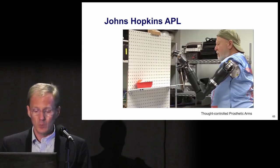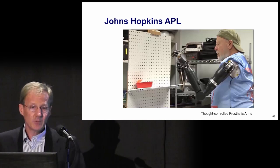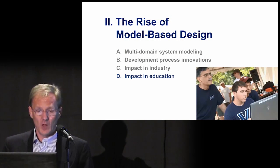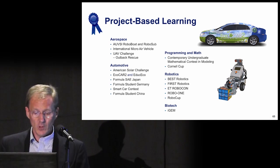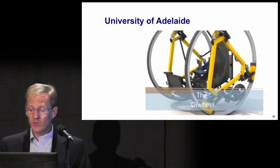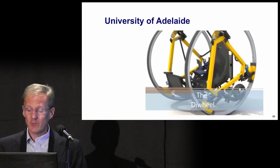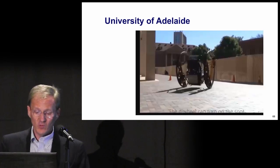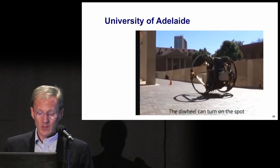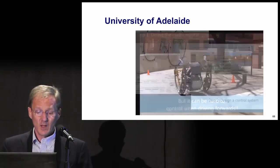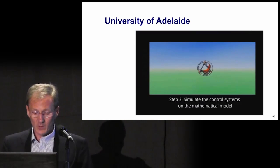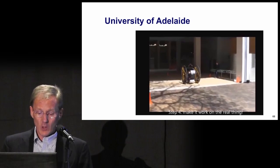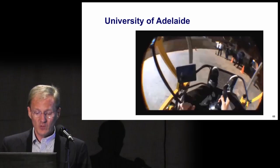This is an example of what a small team can do in building controls. In the area of project-based learning and engineering contests, here's one at Adelaide University. This is the electric die wheel used for fourth-year capstone projects and research. Running without a controller, you can see it's basically unstable — it rocks a lot. Step one is to derive the math equations of motion. Step two is to design a control system. Step three is to simulate the control system on the model. Step four is to generate code and run it in real time. And you can see it's nice and stable.